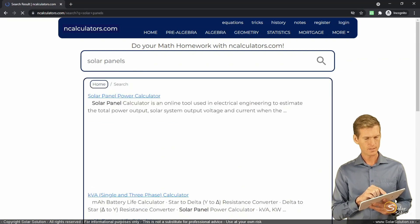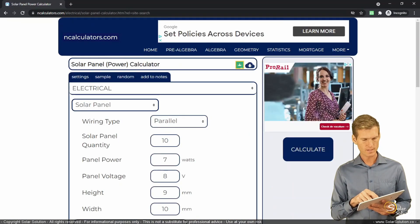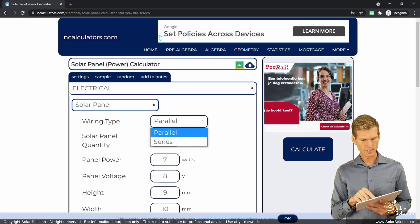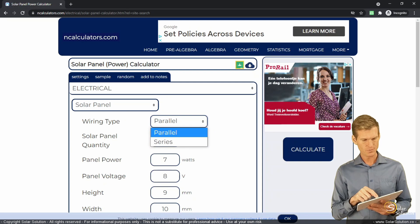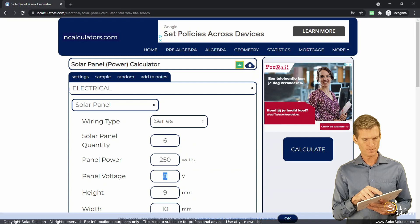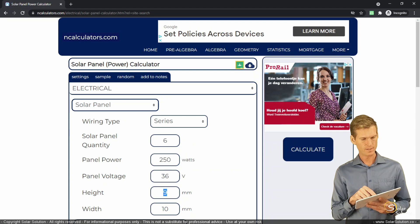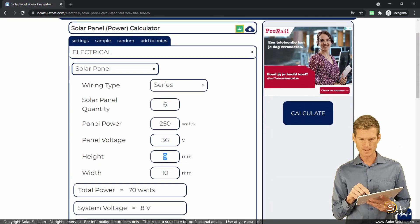And let's search for solar panels. Okay, and then we select solar panel power calculator. Sounds good. So here we are. It's a very simple calculator, but very effective. So we select series connection, we select six panels, each panel is 250 watts. We assume panel voltage, and that refers to the open circuit voltage, is 36 volts. The height and the width, I don't really care for this exercise. And then we press calculate.